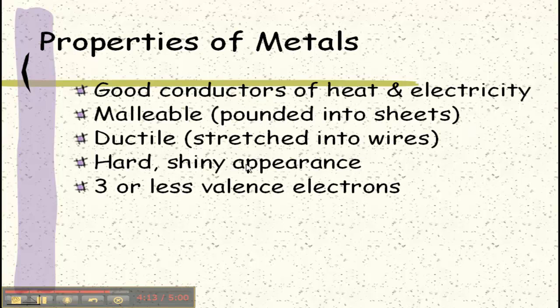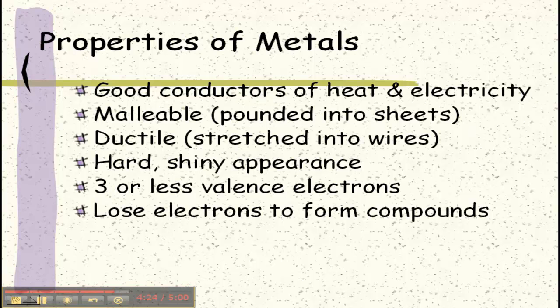Here's what becomes really important when we're talking about metals. They have three or less valence electrons. Their dot diagrams, their Lewis structures, would have three or less electrons. They tend to lose electrons to form compounds, and this is going to be important in the next unit.